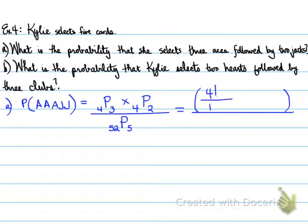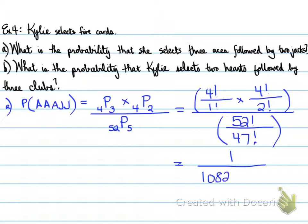So 52 choose five gives us the total number of cards. Well, four choose three is four factorial over one factorial times four choose two is four factorial over two factorial, and 52 choose five is 52 factorial over 47 factorial. And what we're doing here, folks, is converting the permutation method to factorial to get our final answer.